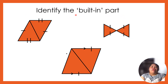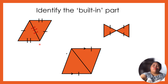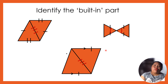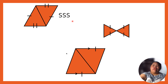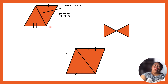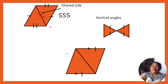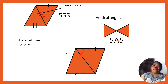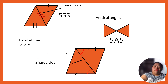Now let's identify the built-in parts here. So this side is the built-in side. Then we have the built-in angles and also this side. For SSS, this is the shared side. We also have the shared angle and the vertical angles for SAS, and then the parallel lines — these are the shared sides.